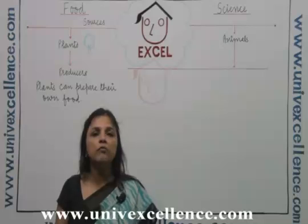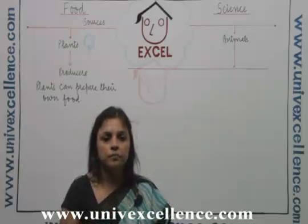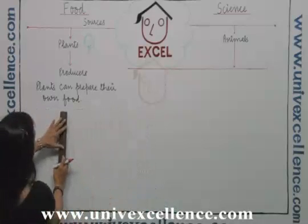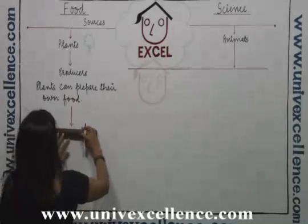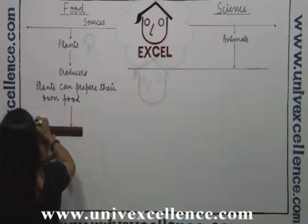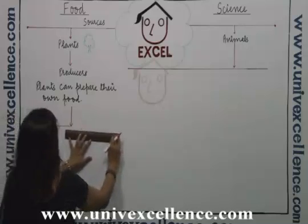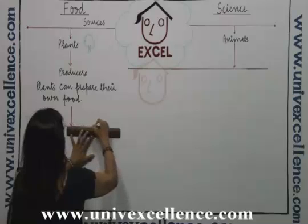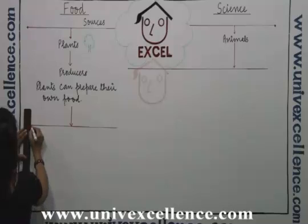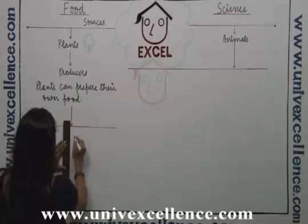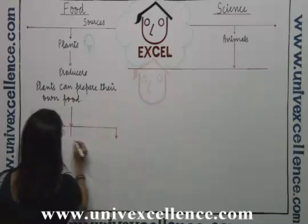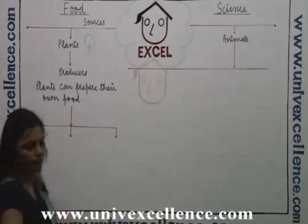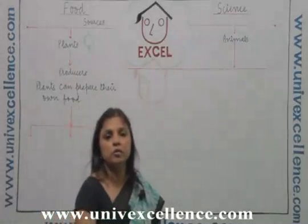Plants use three non-living things to prepare the food. What are these non-living things? So plants mainly use three non-living things to prepare the food.